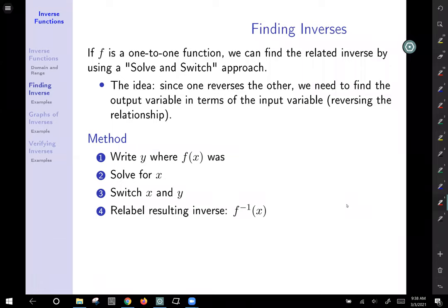All right, next, now we're going to talk about finding inverses. So we know that for a function f to have an inverse, it needs to be a one-to-one function. So if you have a one-to-one function, we can find the related inverse by solving and switching, or some texts like to reverse it as switch and solve.